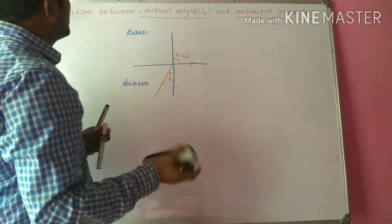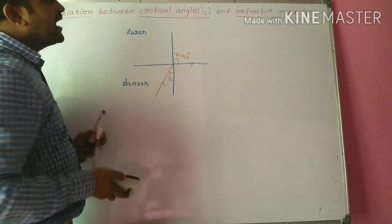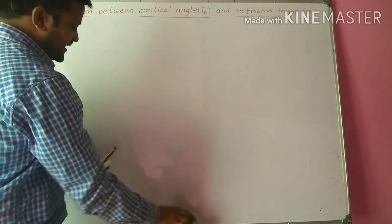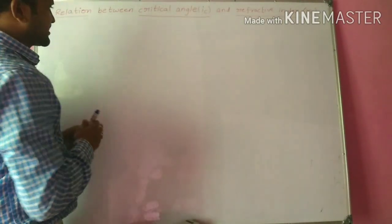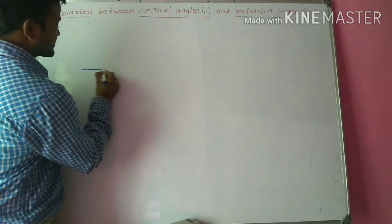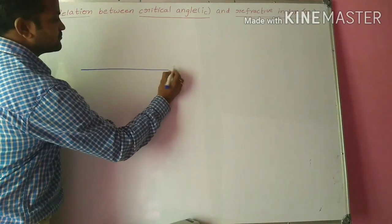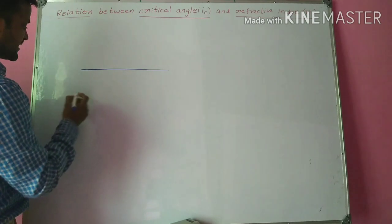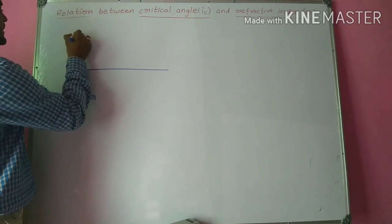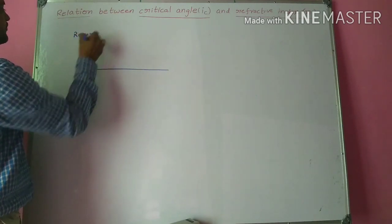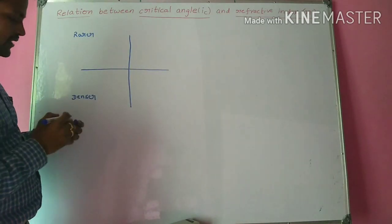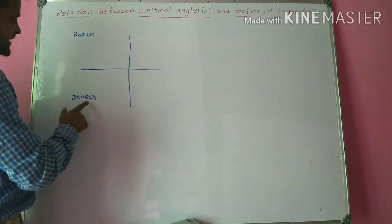Now we are going to derive the relation between critical angle and refractive index of the medium. Let us start the derivation. Let us consider the interface between rarer medium and denser medium. This medium is the denser medium and this medium is the rarer medium. This is the normal to the interface.